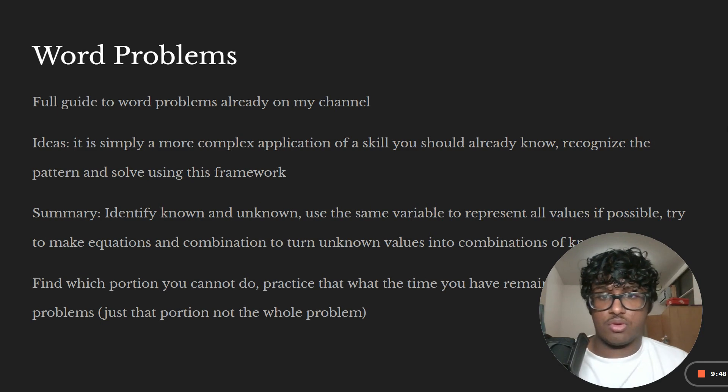Word problems. I have a full guide to math word problems already on my channel. It should have been posted about a week ago. So go check that out if you want a full detailed idea. But basically, it's just a complex application of a skill you should already know. So recognize the pattern within that skill that you've applied before and use this framework. And here is the framework. So it's just a basic summary of it. I go into more detail in that video. But basically, you identify the known and unknown values, and use the same variable to represent all the values if it's possible. And so like, let's say I have like amount of lions, amount of bears. And the amount of bears is double the amount of lions. So amount of lions would be X and amount of bears would be 2X. I use the same variable, but I'm representing two different things. I could easily just said X and Y. But we want to use the point of parity, the point of relation. To use the same variable to represent all the values.